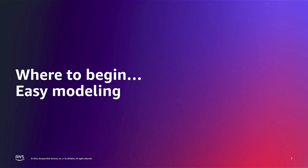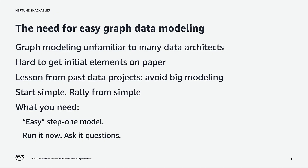With graph, we no doubt have lofty ambitions, but we need to start somewhere — start relatively simply. The proposal is to start with an easy graph model at the beginning of your graph journey. Graph modeling is unfamiliar even to experienced data architects; it's hard to get the initial elements on paper. A lesson from past projects is to avoid big modeling — building a very large model up front. Rather, start with something simple that the team can rally around, something that is not a throwaway artifact but something you would build on.